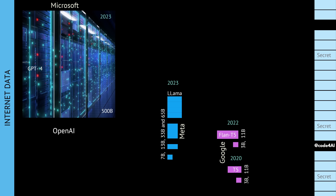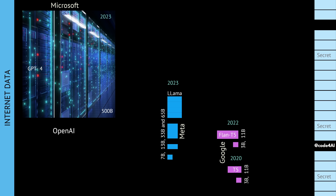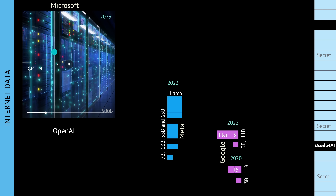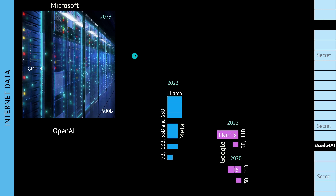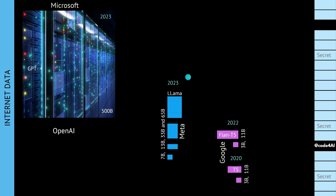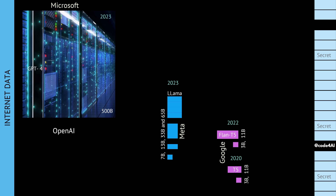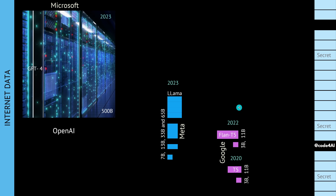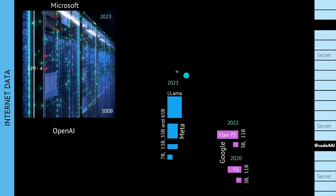As surprising as it might be, we do not have so many available models for the scientific AI community. We have GPT-4 — a complete black box; we don't even know the size of GPT-4. From Meta we have four LLaMA sizes: small, medium, large, and extra-large. And then from Google, the T5 and Flan-T5, which are more or less the only truly open-source LLMs we have.